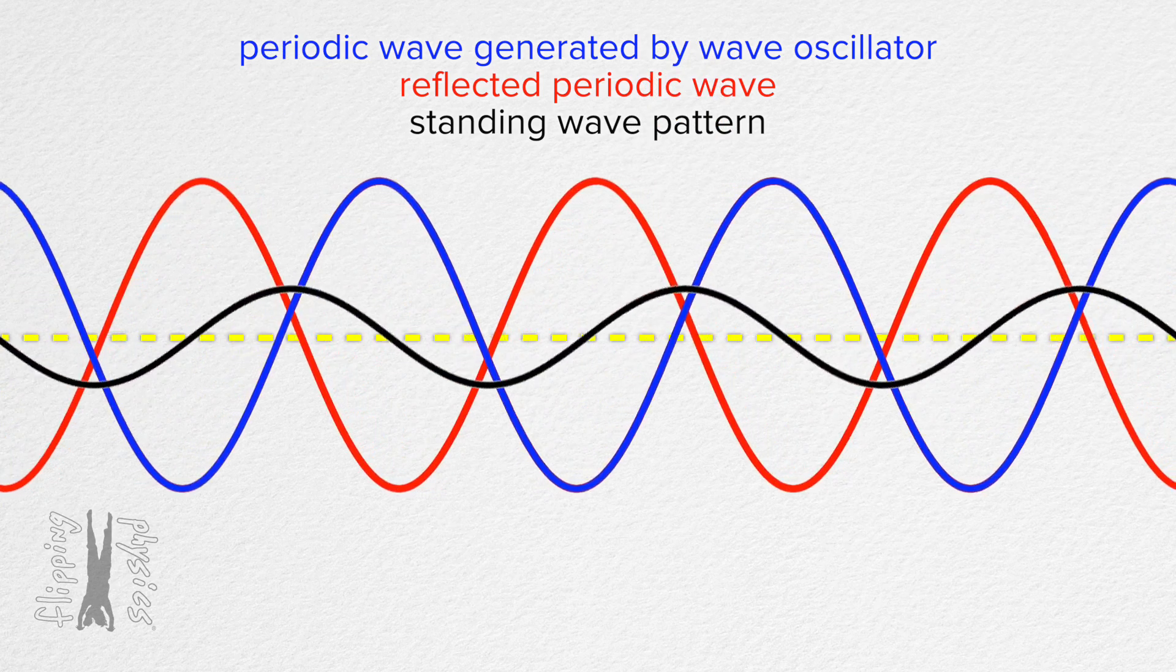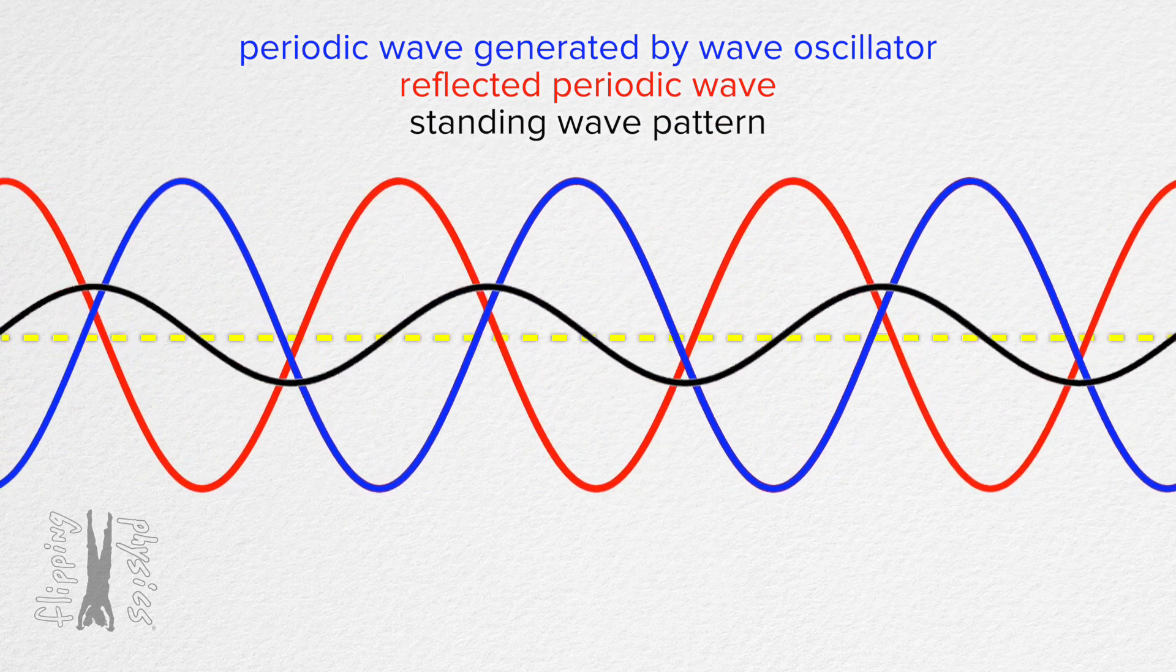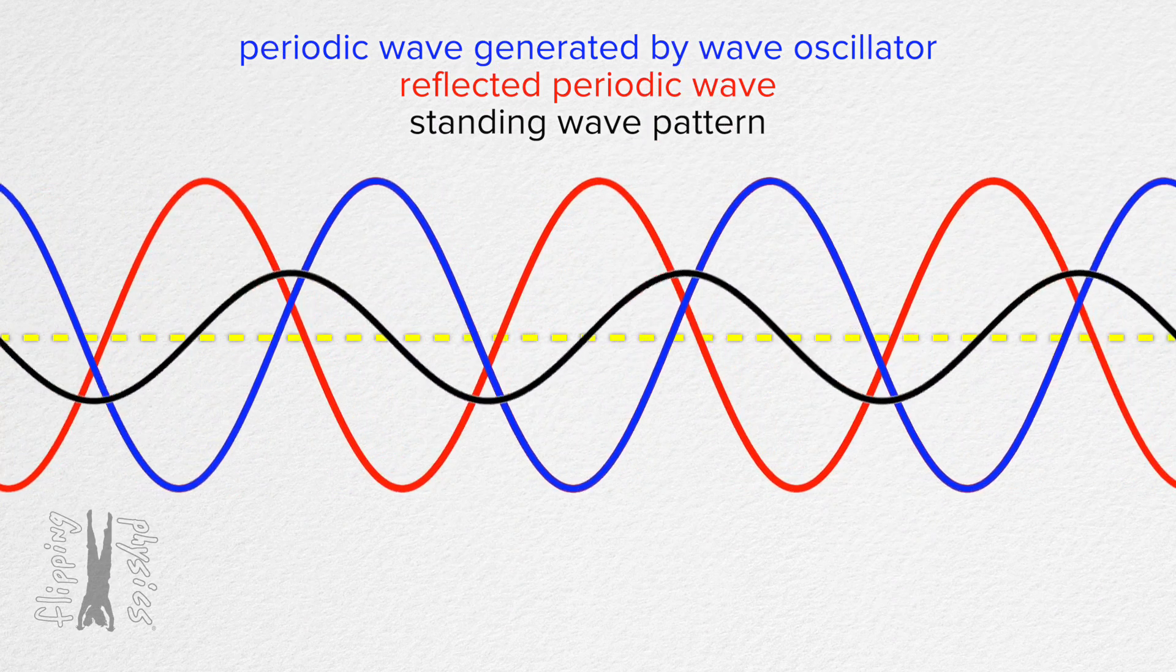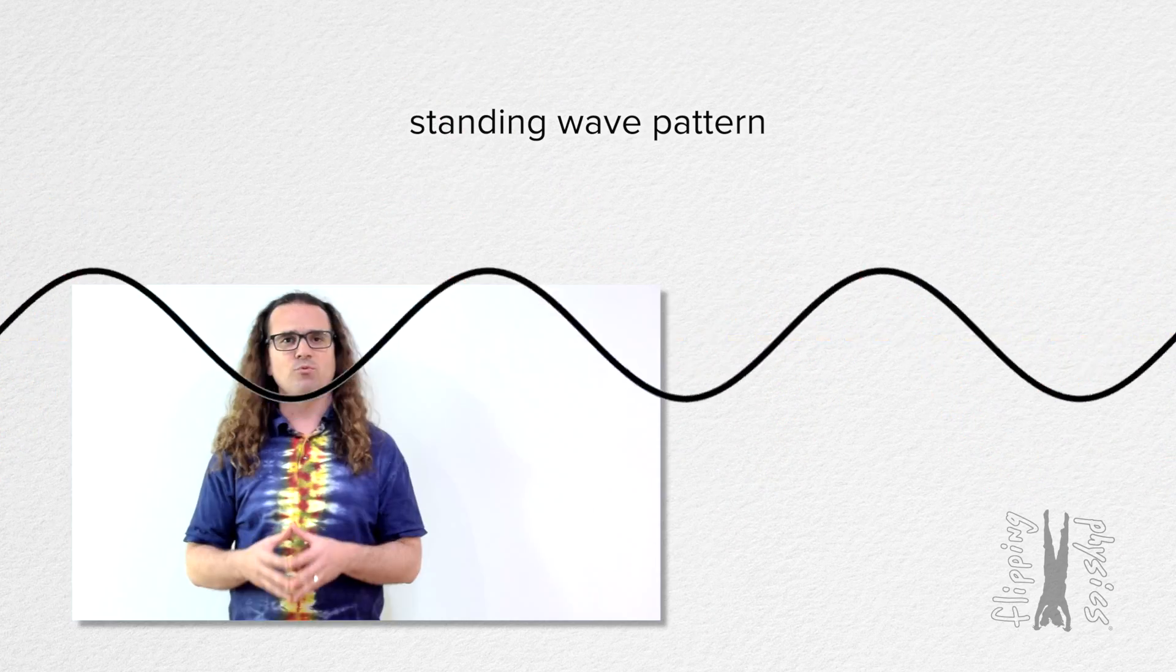The black wave represents the standing wave pattern which is created by the interference of the blue and red waves. And the black standing wave pattern is the only one we actually see. Perfect, Bo. So, let's remove the blue and red waves.